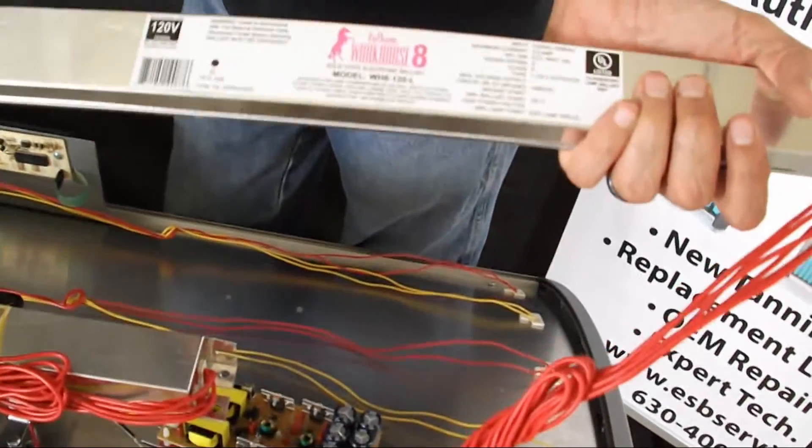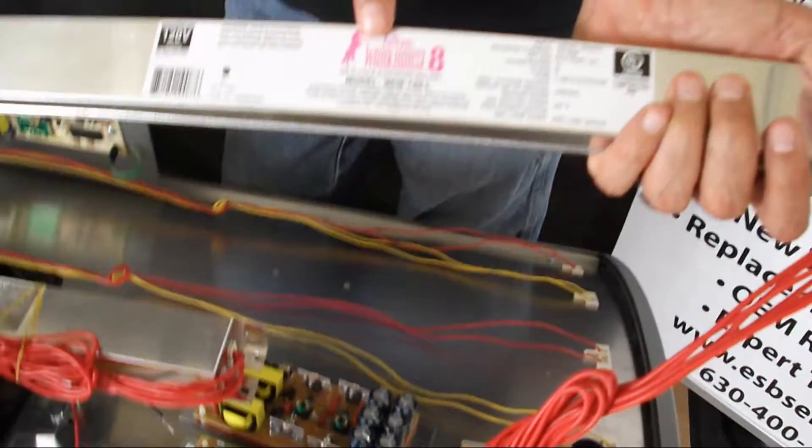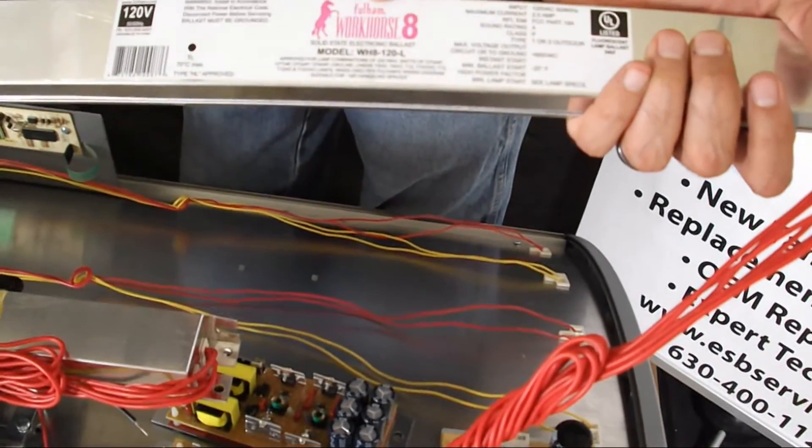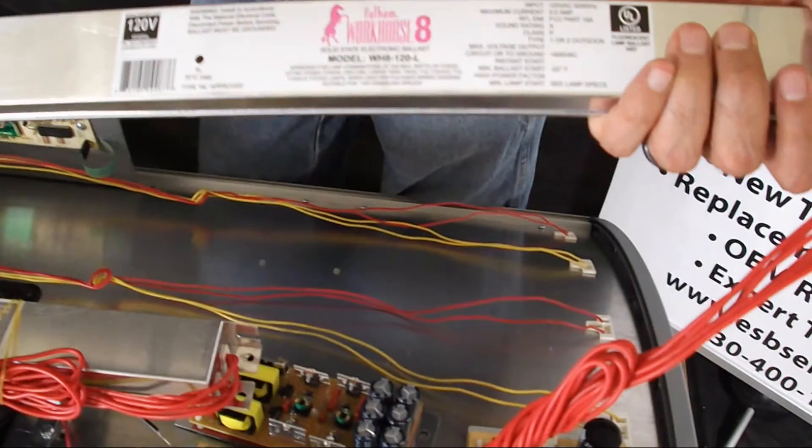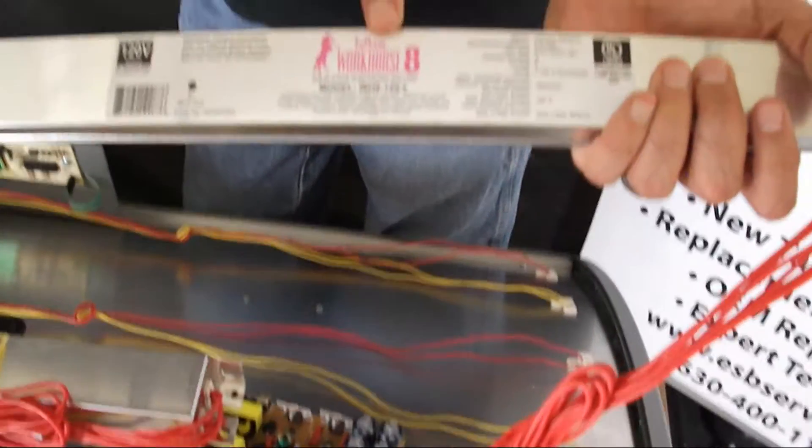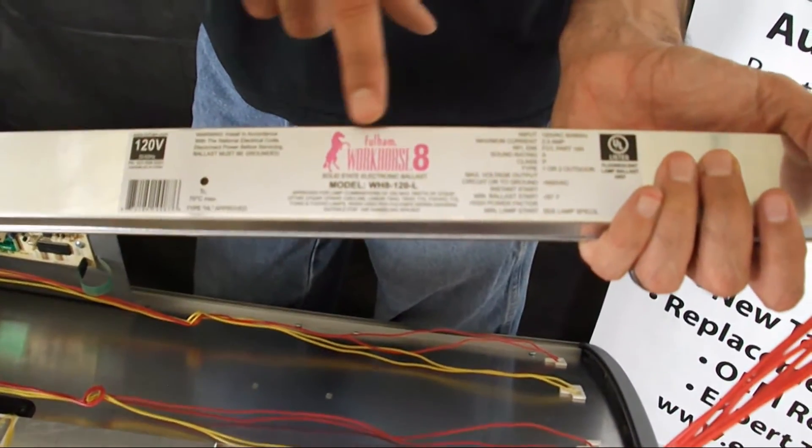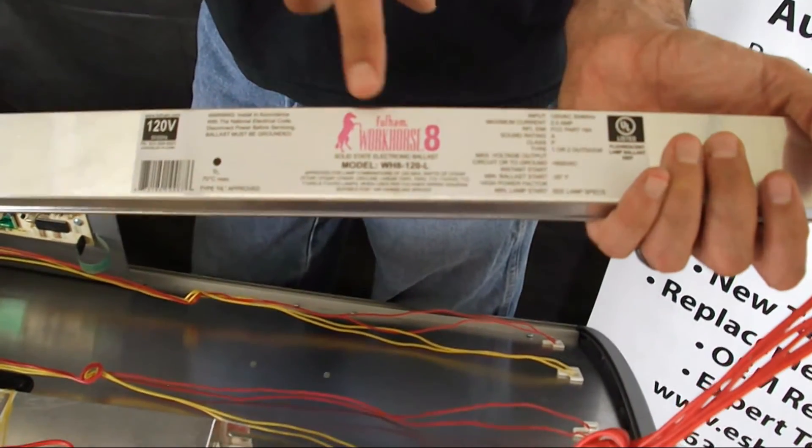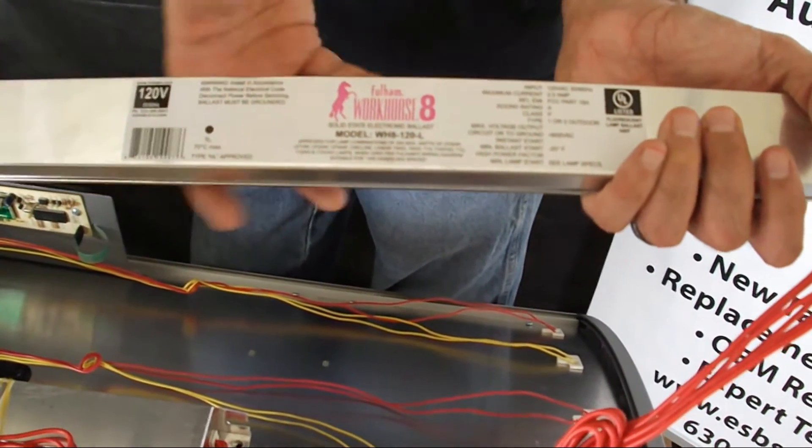RT ballast might say workhorse on there, and it might even say sunhorse on there. A workhorse 8 would be a three-lamp or a two-lamp version, and a workhorse 7 would be a two-lamp version.